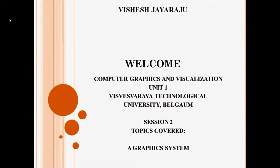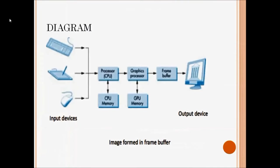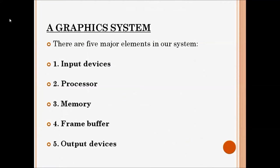Welcome to the second session of computer graphics and visualization. In this session I am going to cover the topic of graphic systems. To construct a graphic system I need five components: input device, processor, memory, frame buffer, and output device.